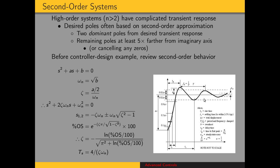For a general second order system, the characteristic equation has coefficients A and B. The natural frequency is the square root of B, and the damping ratio is A/(2ωₙ). The characteristic equation rewritten in terms of damping ratio and natural frequency gives us the standard form. Given transient parameters such as percent overshoot, we can solve for the damping ratio. Settling time is expressed in terms of damping ratio and natural frequency, so desired transient behavior yields ζ and ωₙ, which give the desired characteristic equation and the two dominant pole locations.